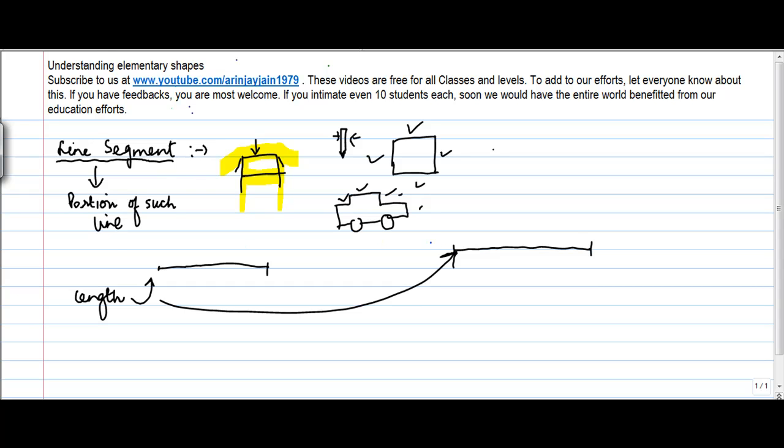So let us say in this particular line I have a point B here and then I have C. When I say line segment AB, what I mean is the portion of this particular line which is covered between the two points A and B. The distance, the portion, or the length between these two points is called the line segment.